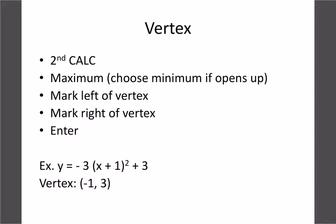Now let's figure out the vertex on the calculator. We already know from the equation that our vertex should be at negative 1, 3 — that was our P and Q. Go to Second CALC, choose Maximum because we know it's upside down. Move your cursor left of the peak, hit Enter, go right of the peak, hit Enter, then Enter again, and it gives you your maximum. My calculator gives negative 0.99999 — just round that to negative 1 — and a y of 3, which is correct. You can always use Second CALC max or min to find the vertex.